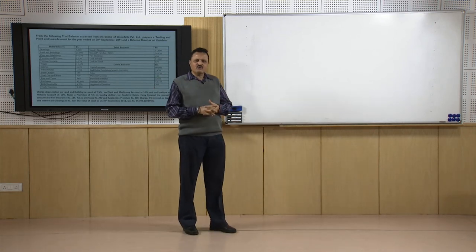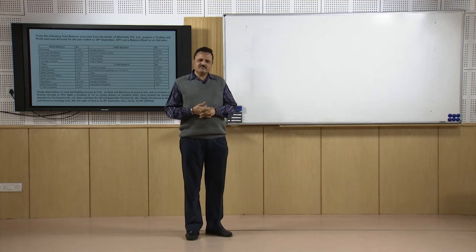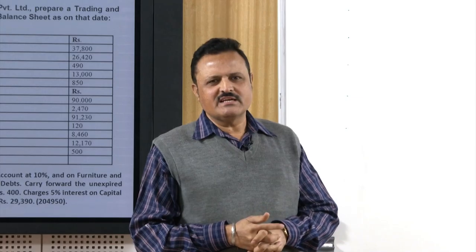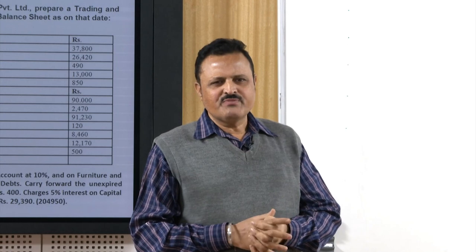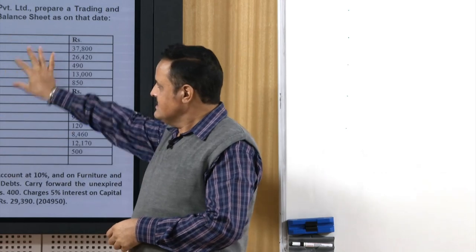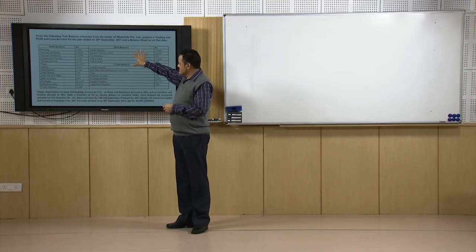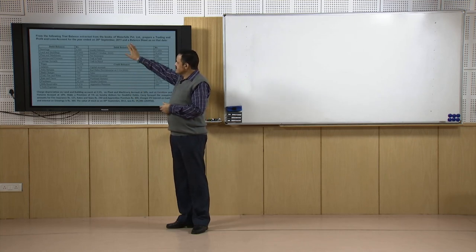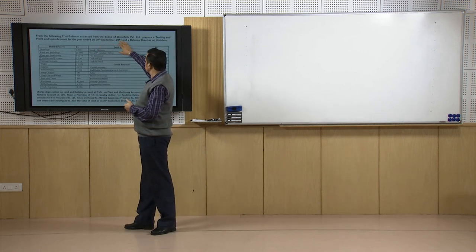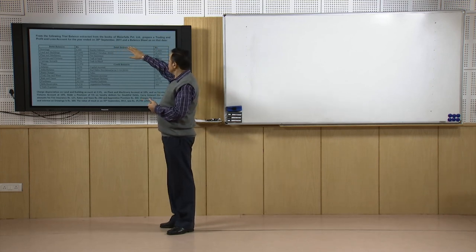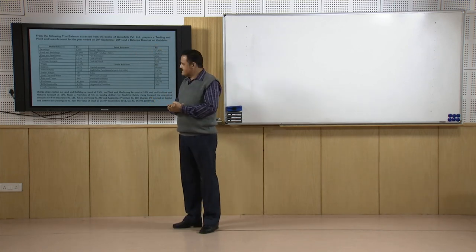Now, 3 to 4 more adjustments remain, and after that we will learn how to implement these adjustments in preparing the financial statements. For example, in this problem a trial balance table is given along with some additional information, and we are asked to prepare a trading and profit and loss account for the year ended 30th September 2011 and the balance sheet on that date.